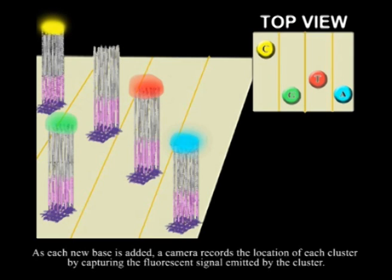As each new base is added, a camera records the location of each cluster by capturing the fluorescent signal emitted by the cluster. The combination of these images creates the sequence.